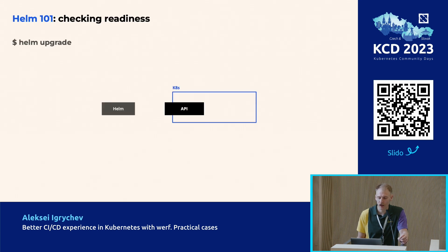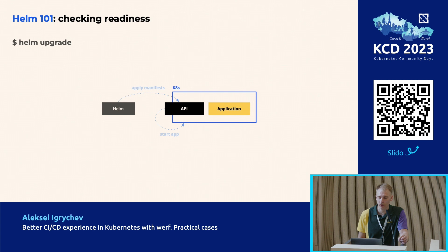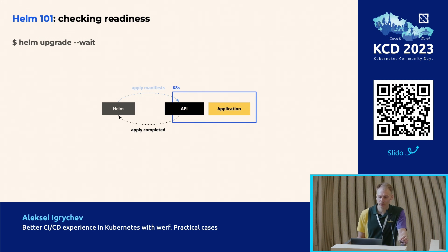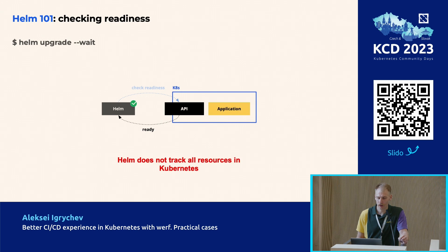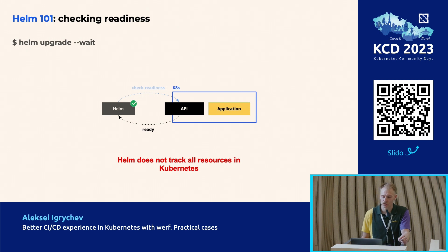I would like to start by looking at what Helm can do in this context — and this is valid not only for Helm. We have Helm and we deploy our application to Kubernetes. We run the Helm upgrade command. Helm applies manifests to Kubernetes, Kubernetes applies manifests and tells Helm they have been applied successfully, then the command completes successfully. But we need more, because we want to know when the application is ready. Helm has a wait option that allows us to wait until the application becomes ready. After the manifests are applied, Helm starts checking the readiness of the application, and when it is ready, the command completes successfully.